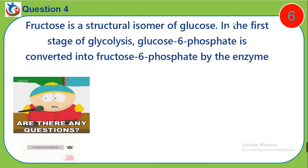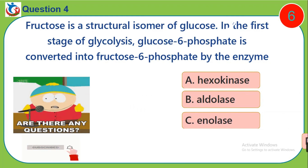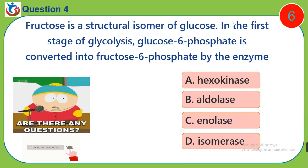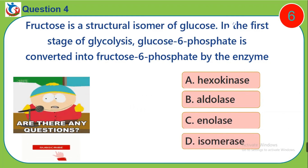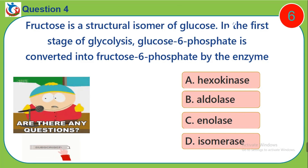Question 4. Fructose is a structural isomer of glucose. In the first stage of glycolysis, glucose 6-phosphate is converted into fructose 6-phosphate by the enzyme: A, exokinase. B, haodolase. C, enolase. D, isomerase.